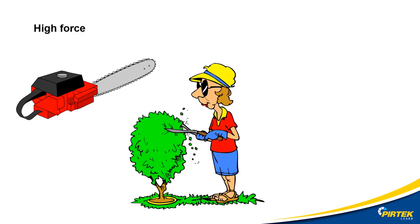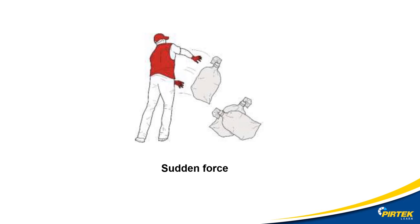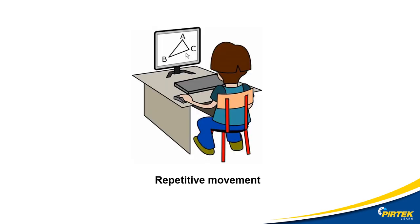High force — overexertion of muscles — occurs when increased muscle effort is required in response to a task. Holding a chainsaw or a hammer drill for a prolonged period of time is a high force activity. Sudden force — jerky or unexpected movements — for example, throwing or catching boxes, especially problematic if the boxes are a little too heavy. Repetitive movement — doing the same thing over and over all day.